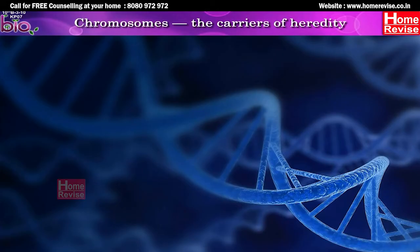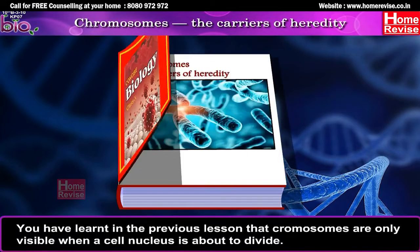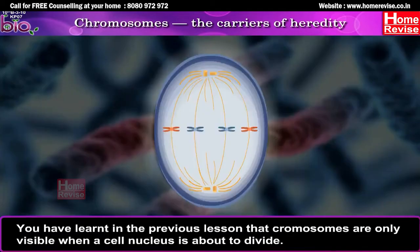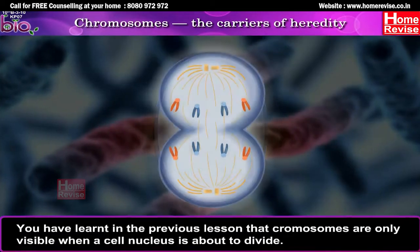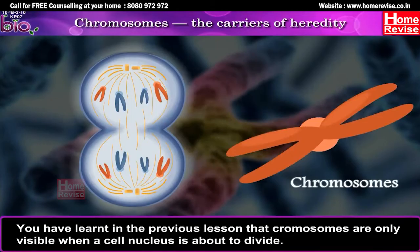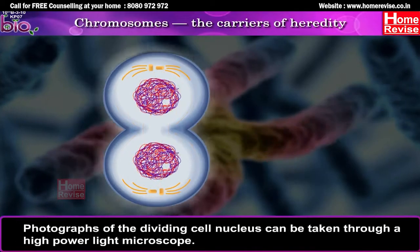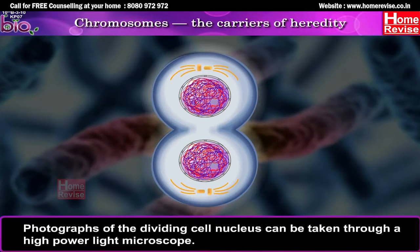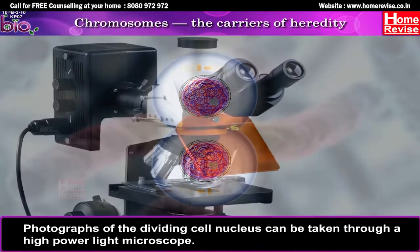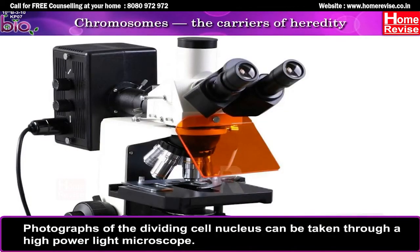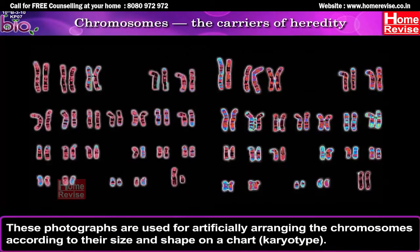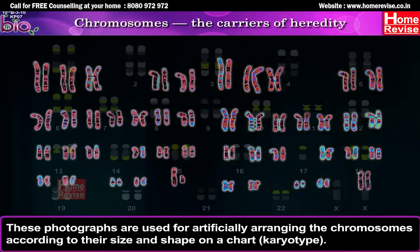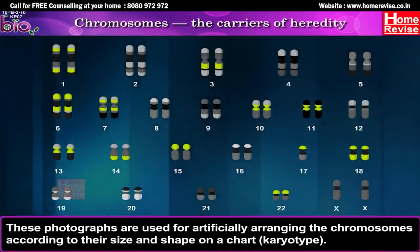Chromosomes: the carriers of heredity. Chromosomes are only visible when a cell nucleus is about to divide. Photographs of the dividing cell nucleus can be taken through a high-power light microscope. These photographs are used for artificially arranging the chromosomes according to their size and shape on a chart — this is called a karyotype.